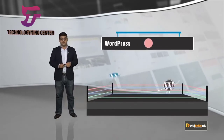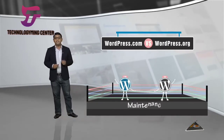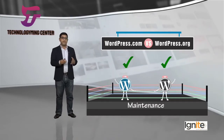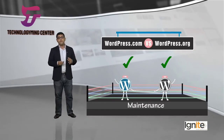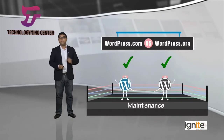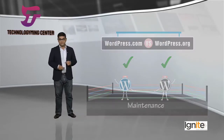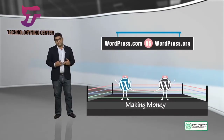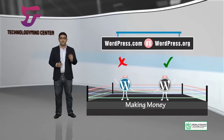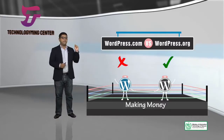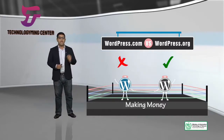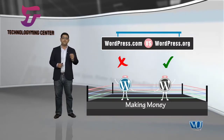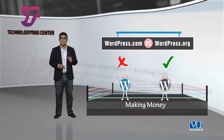Let's talk about maintenance. Ye wo ek area hai woh wordpress.com is much better, because maintenance aapki already manage hoti hai. Lekin wordpress.org also gives you what we call as customization. Let's talk about making money. When it comes to making money, hands down wordpress.org is the best option, kyunki aap apni marzi se ads laga sakte hain, aap apni marzi se ads sell kar sakte hain, aur aap apni marzi se jo chahe karna chahein wo is pe kar sakte hain.